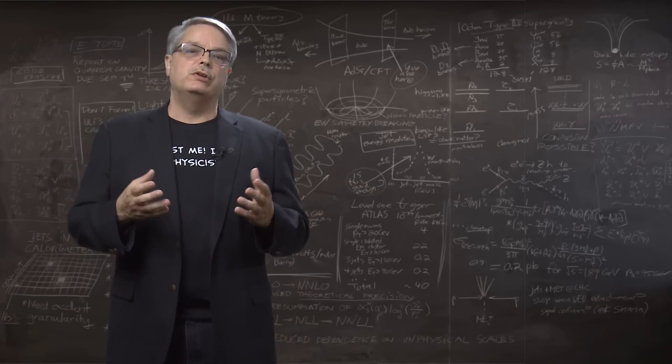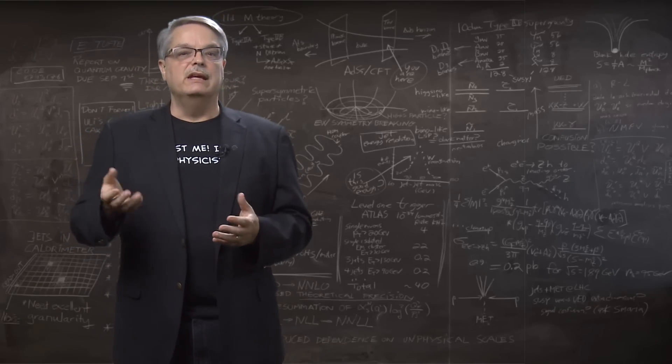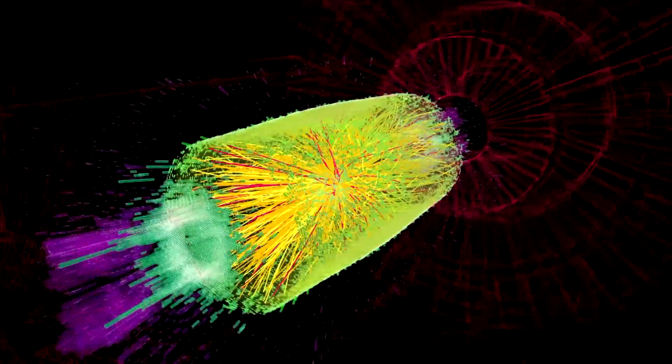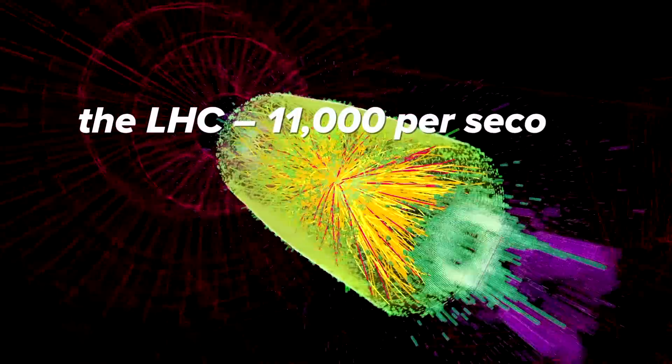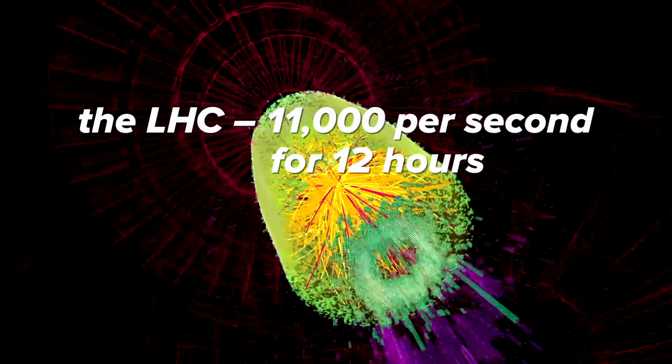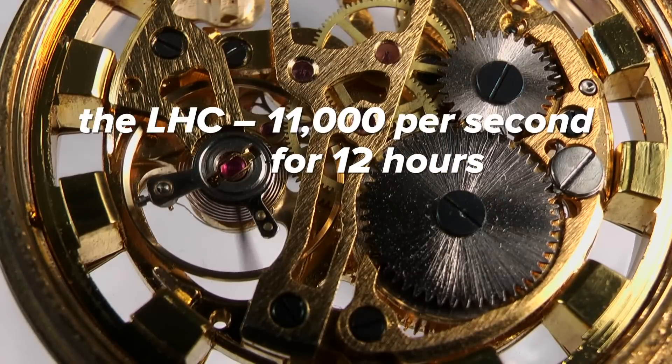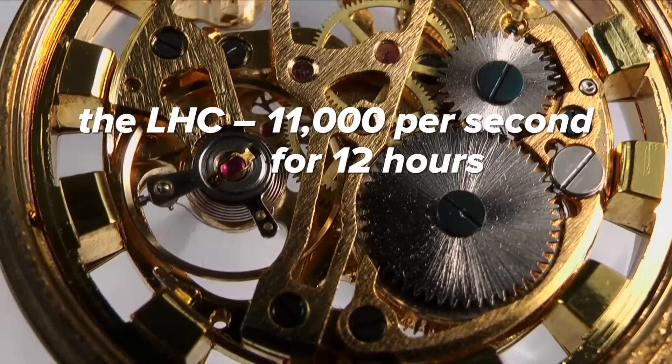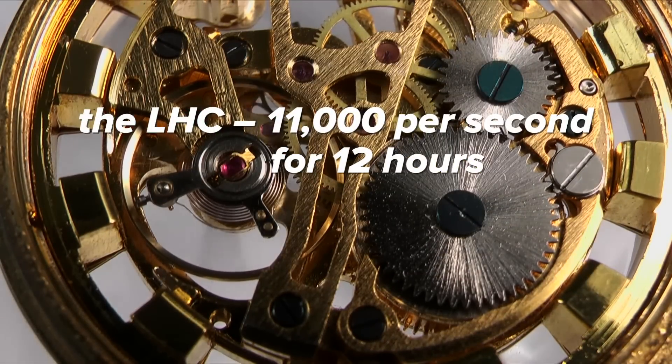On the other hand, a circular accelerator is harder. In the case of the LHC, the beam goes around 11,000 times a second, and the beam can circulate in the machine for 12-ish hours. That means everything has to work to incredible precision to keep the beam inside the accelerator. So that's one minus for a circular accelerator.